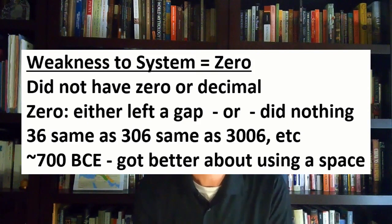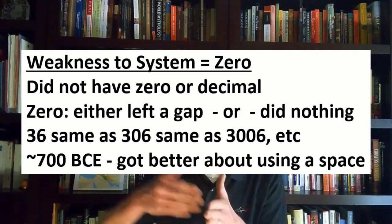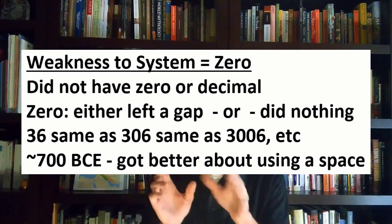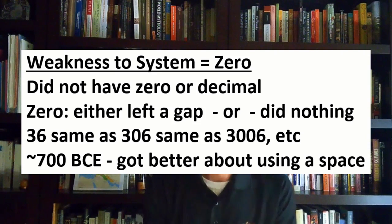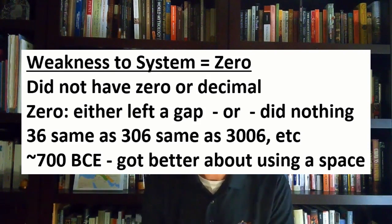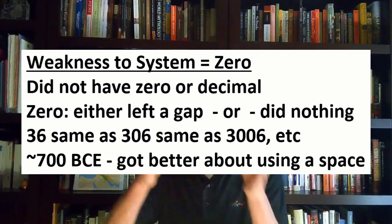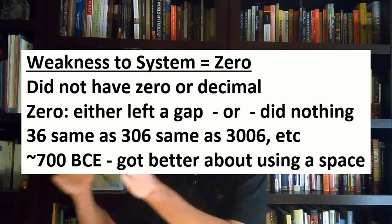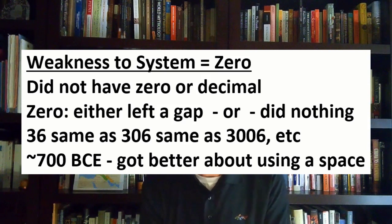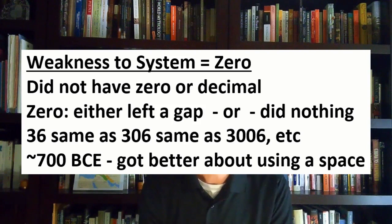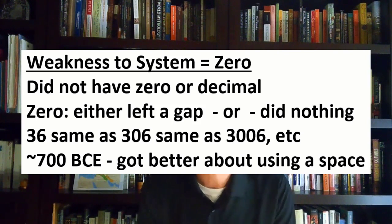Now let's talk about a weakness to their system. They did not have a zero. They would either leave a gap, especially in later times, to signify a zero or nothingness. So the number 36 in cuneiform would be written the same as 306, which would be written the same as 3006. You just have to know what you're dealing with based on context.